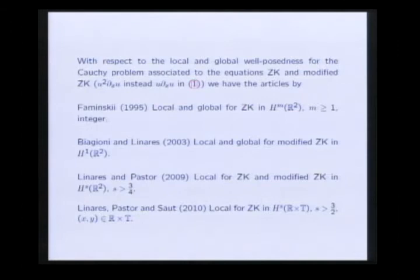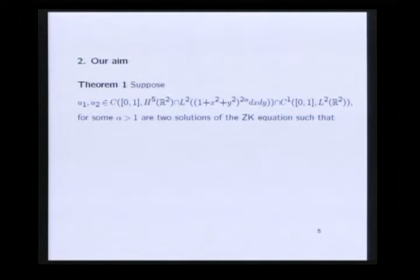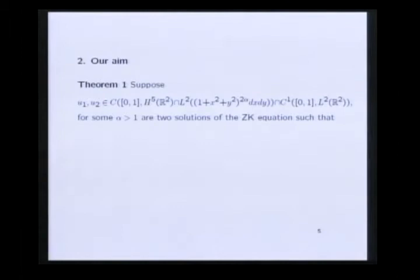The main goal in our talk is to establish sufficient conditions on the behavior of the difference of two solutions of the ZK equation at two different times which guarantee that they are equal. More precisely, we will prove that if we have two sufficiently smooth solutions of the ZK equation with polynomial decay at infinity such that their difference at times T equals 0 and T equals 1 decays exponentially with this order, then they must coincide.